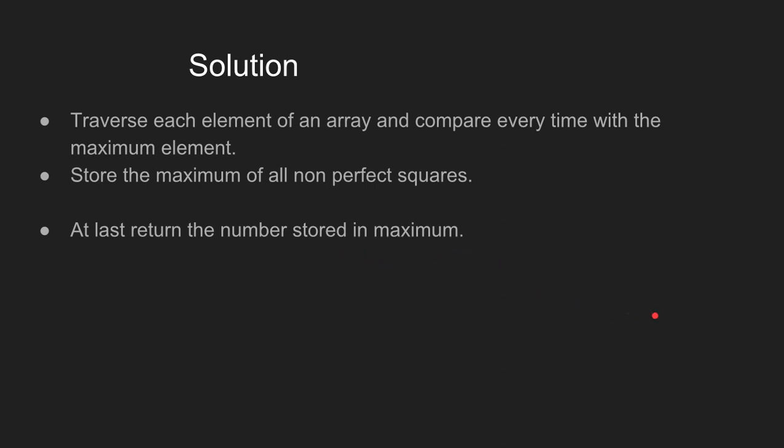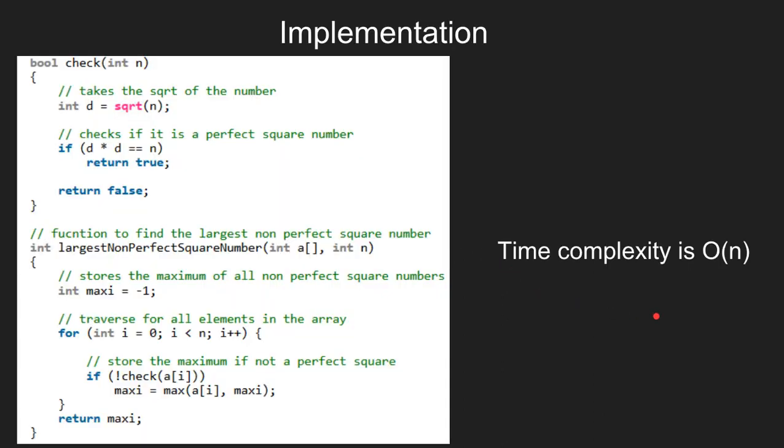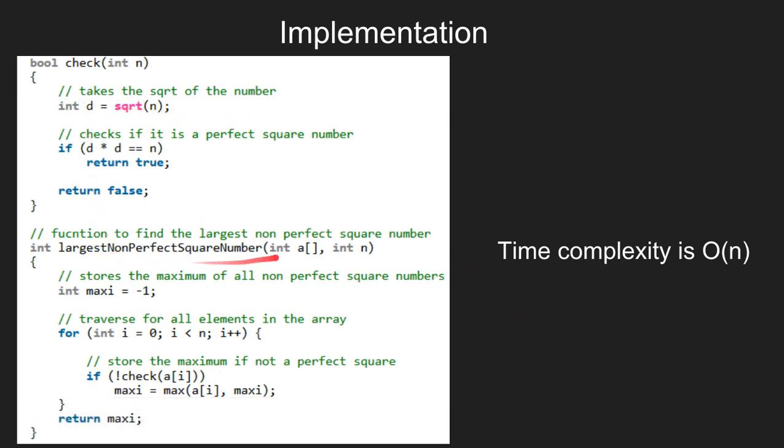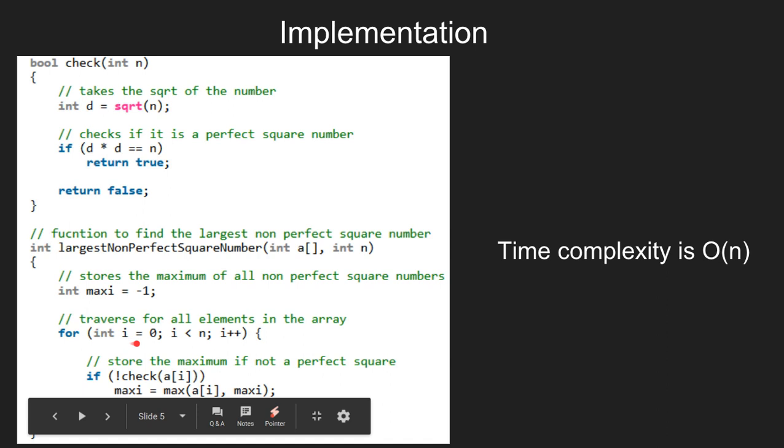Now let's know the implementation of the problem. The first user-defined function that is called is largestNonPerfectSquareNumber, which takes two parameters: an integer array and an integer variable. Inside the function, we initialize minus one to max_i integer variable, and inside the for loop we scan each element.